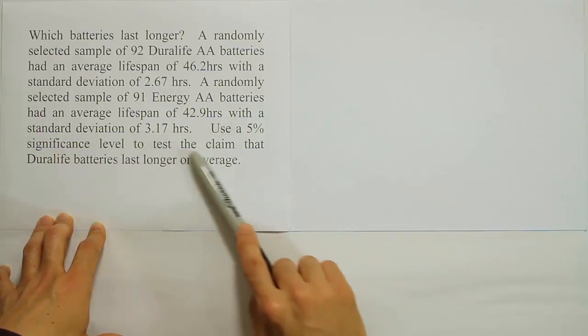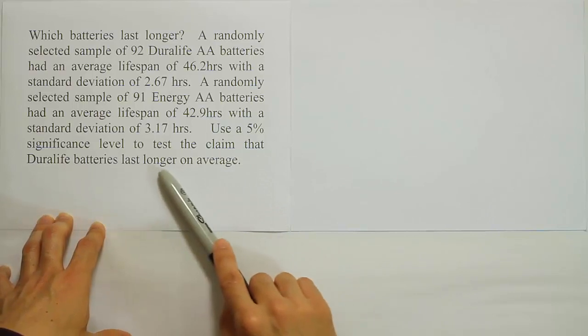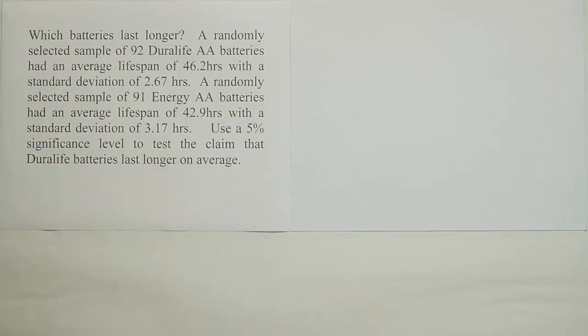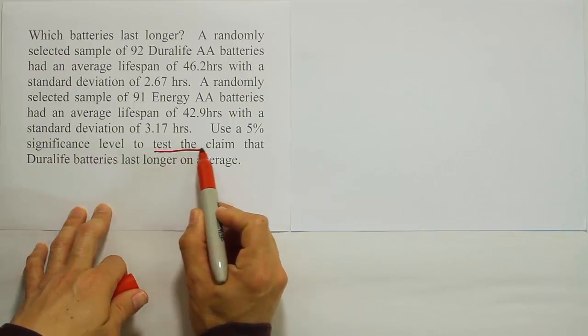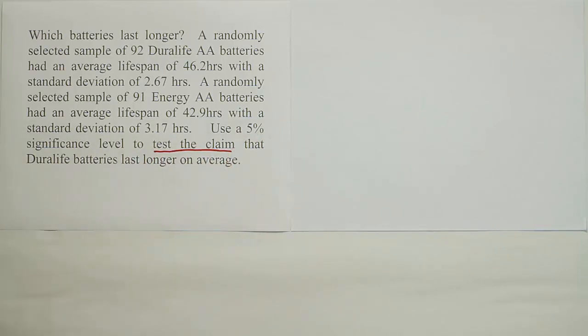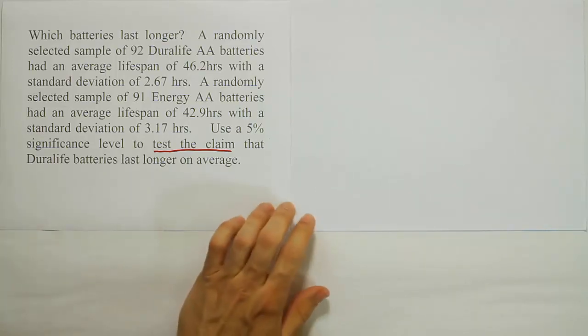Use a 5% significance level to test the claim that the Duralife batteries last longer on average. So this last sentence tells us that we need to test the claim. It's a hypothesis test. Let's set up the claim H0 and HA.